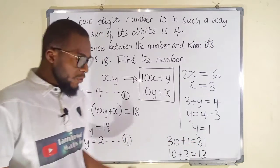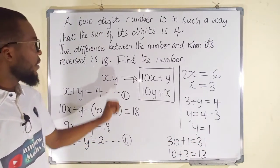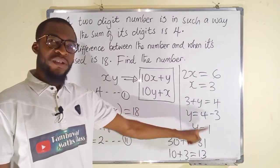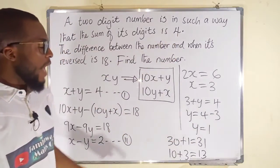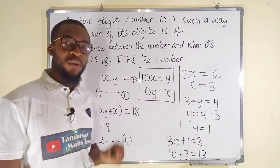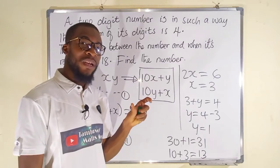So the number could either be 31 or 13. Let us verify both of them. If the number is 31, first digit is 3, second digit is 1, and 3 plus 1 must give us 4. And if you should reverse 31, you are going to obtain 13, and the difference between 13 and 31, 31 minus 13 is 18.